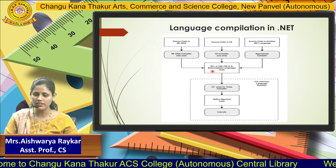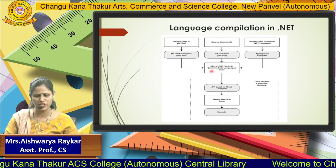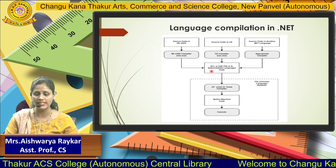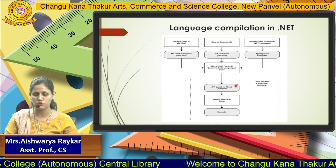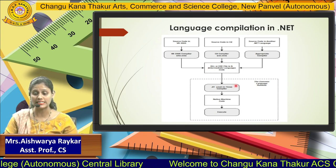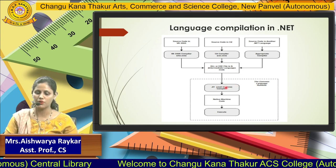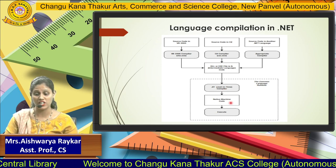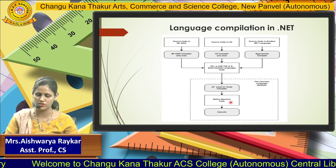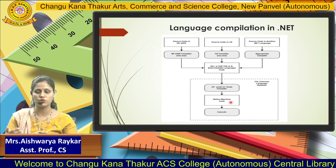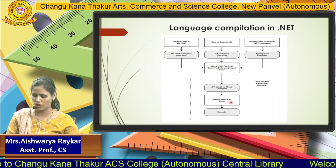Here, DLL (Dynamic Link Library) or an executable file will be present in your Intermediate Language code. Then it will be passed to the Just-In-Time compiler, which will convert the code into native machine code, and finally it will execute the code. This is how language compilation is done in .NET.